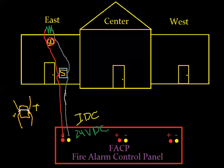So if somebody pulled this pull station, the current on this circuit goes up and the panel knows it's an alarm. This light would turn red, with a label like 'first floor east.' When the fire department shows up, they'd at least know where to start — they may not know exactly what room, but it gives them some direction.